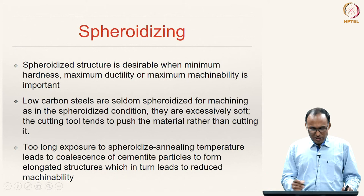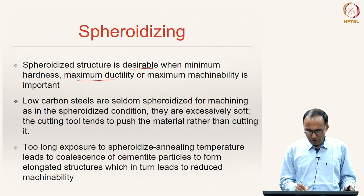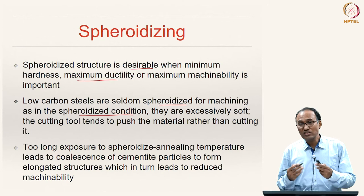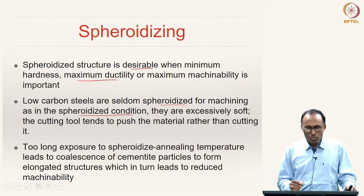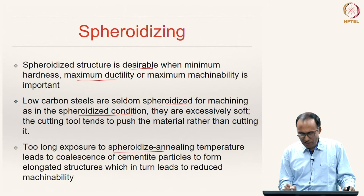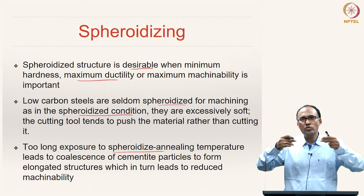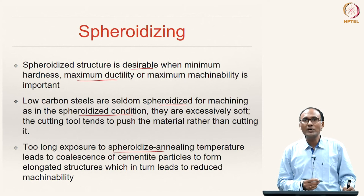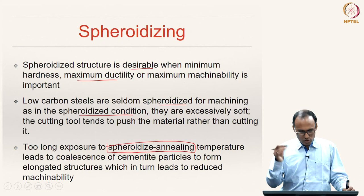The spheroidized structure is desirable when minimum hardness, maximum ductility, or maximum machinability are important. Low carbon steels are usually not spheroidized for machining because in the spheroidized condition they are very soft, causing the cutting tool to push rather than cut. Care should be taken not to expose the specimen for too long at the spheroidizing temperature, as too long an exposure causes the already-formed cementite spheres to coalesce and re-form an elongated network.